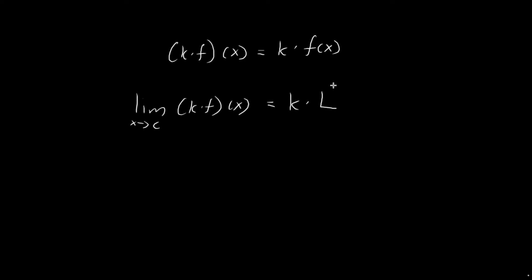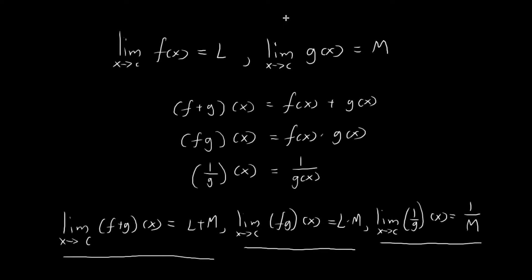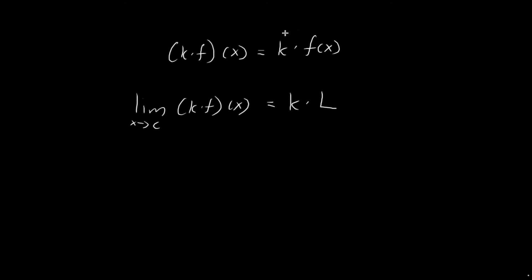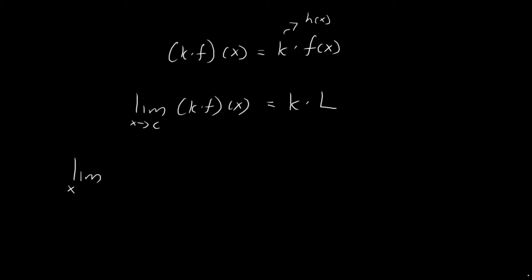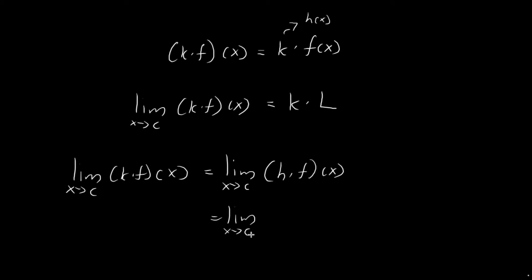Instead of going through an epsilon-delta definition, I'm going to invoke the results already obtained. We can do this by treating the value k as a function — specifically as h of x, where h of x is a function that always produces the output k. So the function k times f is actually just the product of two functions, meaning we can use the product rule. The limit as x tends towards c of k times f of x is just equal to the limit as x tends towards c of h of x times f of x.